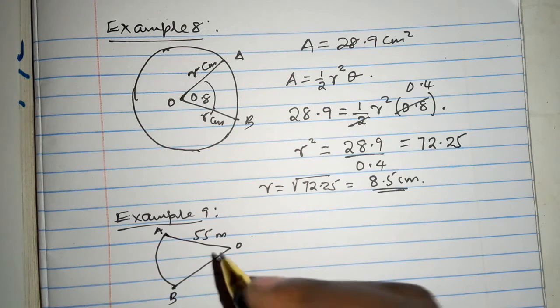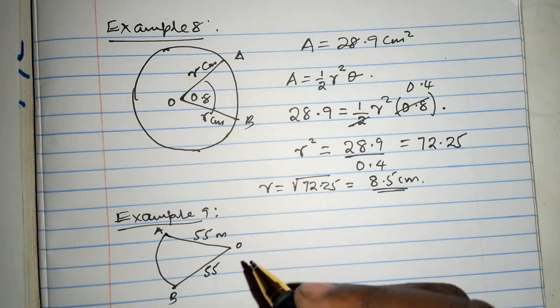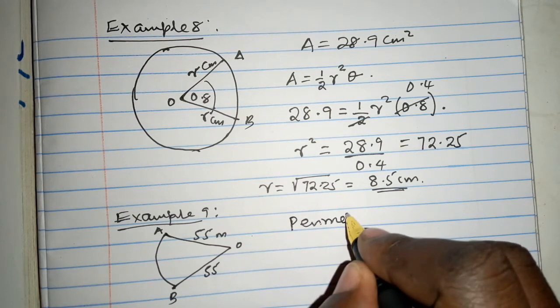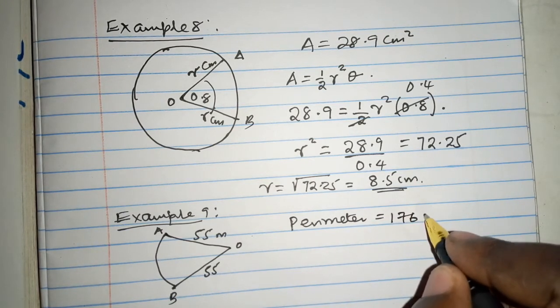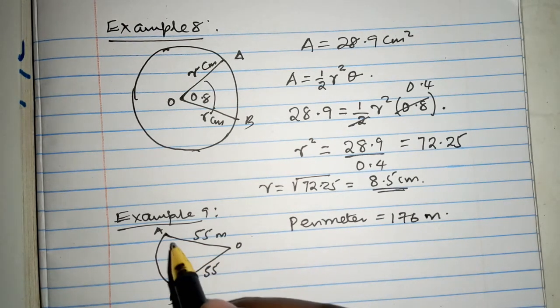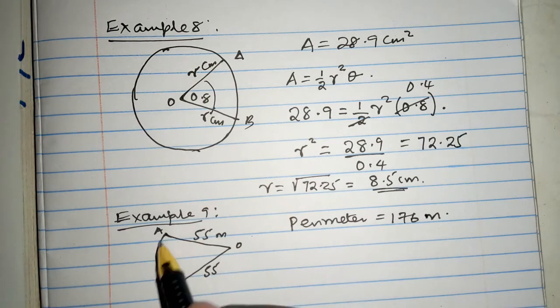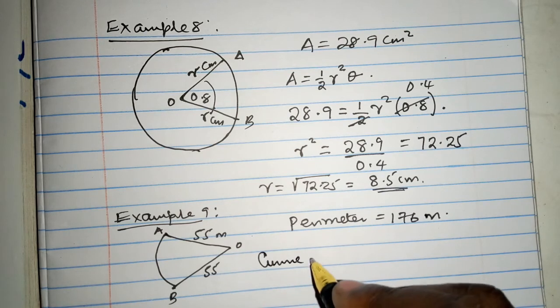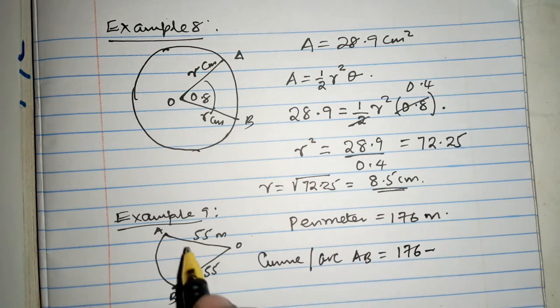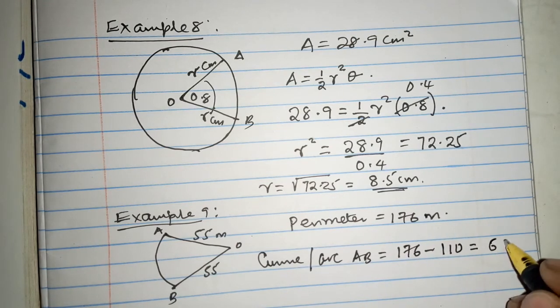The length of the fence that is erected along the edge of the plot to enclose the land is 176, the perimeter. The perimeter. The perimeter now is 176 meters because the perimeter is about the length along the edges. Calculate the area of the plot. Fine. Since the perimeter is 176, we know we have that radius and we have that radius. So, the curve AB, the curve or the arc, the arc AB is going to be given by the whole perimeter 176 minus the two radii, which is 110, which is 66 meters.